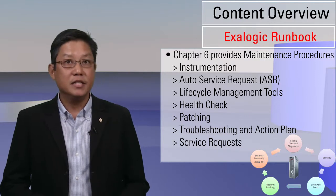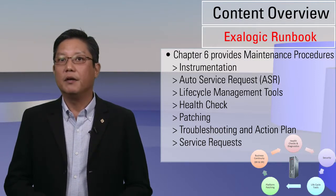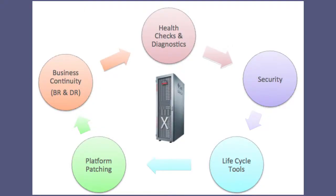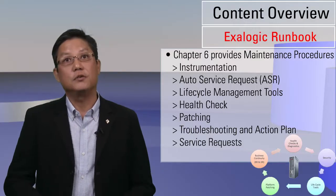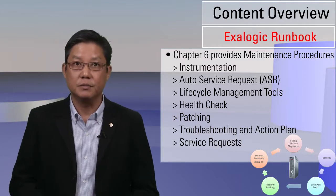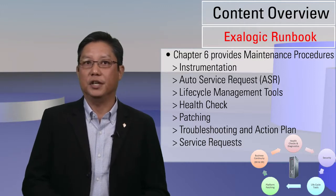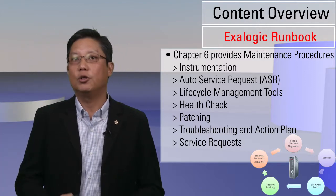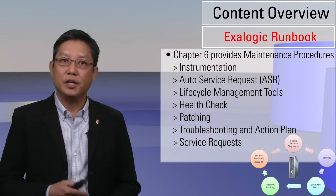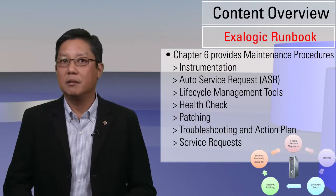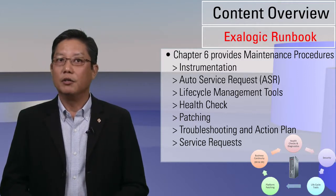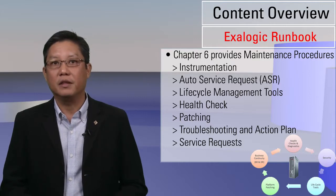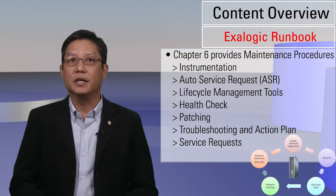Chapter 6 provides maintenance procedures. How do you perform instrumentation? There is a tool called ExoCheck that you can run to look at the state of the system. It also provides information about auto service requests associated with platinum support, which is included with all engineered systems, as well as lifecycle management tools, health checks, and how to perform patching. In case of system issues, it covers basic troubleshooting and how to form an action plan to file service requests. For example, if there is an issue, you run ExoCheck and gather log files using ExoLogs in order to open a service request.